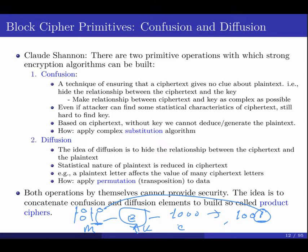So confusion and diffusion are very important properties for building the block cipher. Neither is sufficient alone — you need both. When you combine them together, performing substitution for confusion and transposition for diffusion, you get what's called a product cipher. The product cipher combines confusion and diffusion in one cryptosystem to build a stronger block cipher.